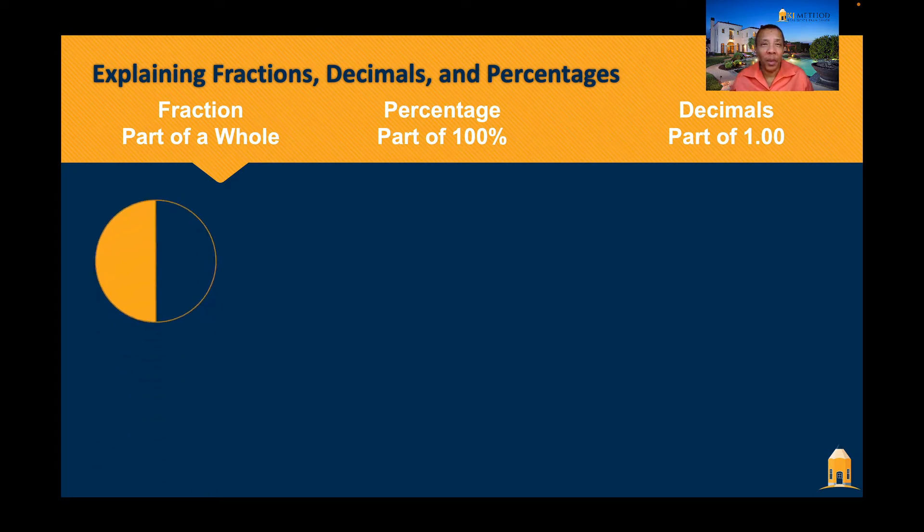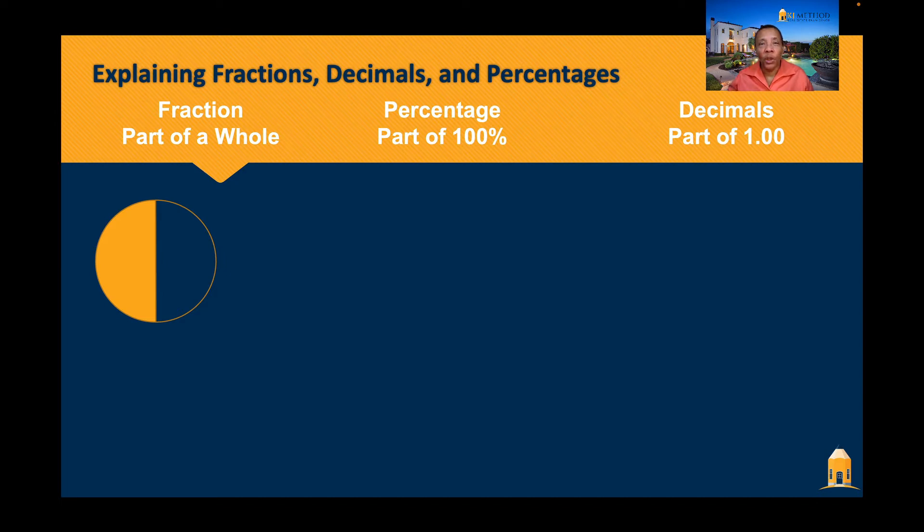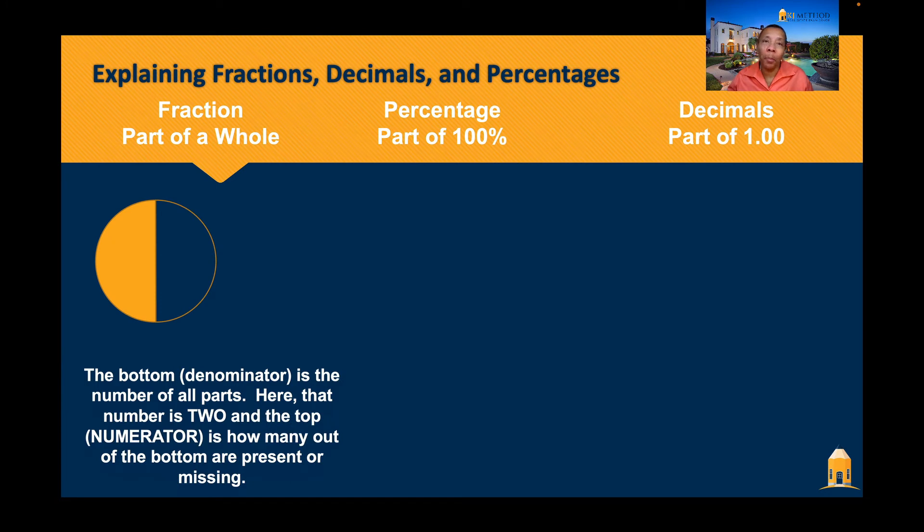If we have a pizza pie and there are two slices to that pizza. When we try to do a fraction what we're saying is the bottom of the fraction is the entire pizza. How many pieces there potentially are. And look here you can see there are potentially two slices of pizza. The top number is going to be whether there's something missing or whether it's present. Let's say I say to you how many pieces are missing. You would say hey KJ there's one piece out of the two pieces that are missing. And so we say it is one half.